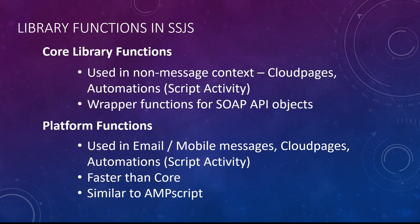Just like Ampscript, SSJS also has a set of predefined functions available for Marketing Cloud which we can use. These are broadly classified into core library functions or platform functions. Core functions are basically wrappers to the SOAP API objects in SFMC, and are primarily used in non-message contexts like cloud pages, landing pages, and script activity.